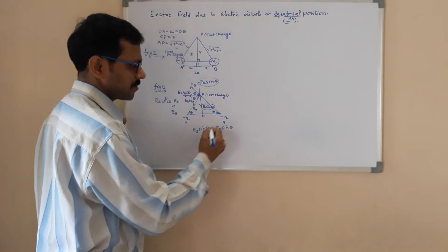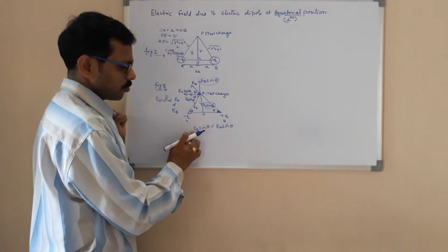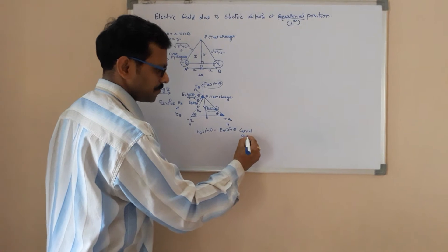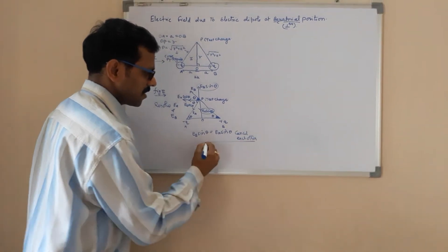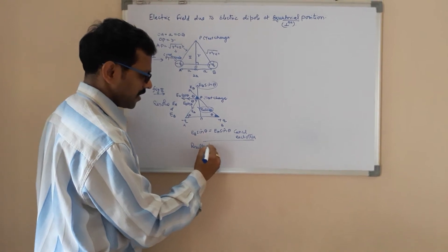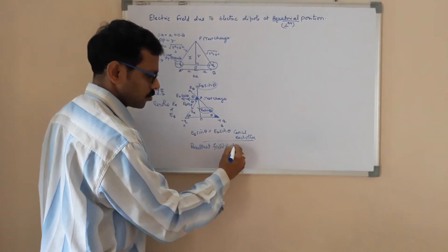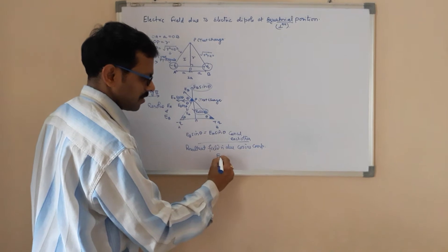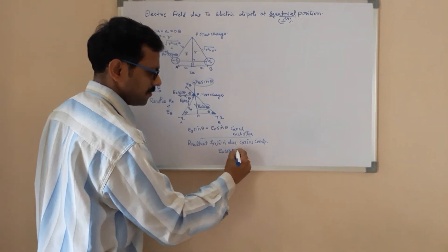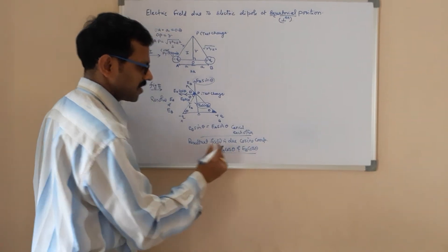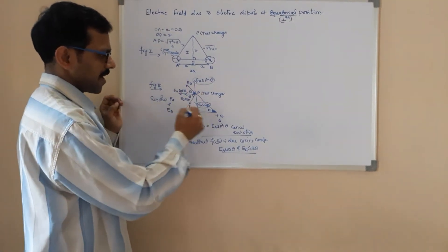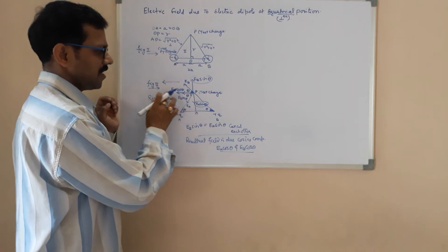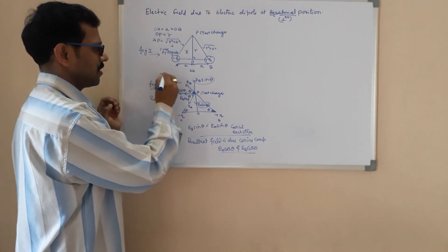The Eb sin theta and Ea sin theta are opposite to each other as well as equal, because the electric fields due to A and B are equal. So they cancel each other. Therefore, the resultant field is due to the cosine components. The cosine component is Ea cos theta and Eb cos theta. Once I know these two components, the resultant will be in the direction of the Ea and Eb cosine components. This is the direction of the electric field.